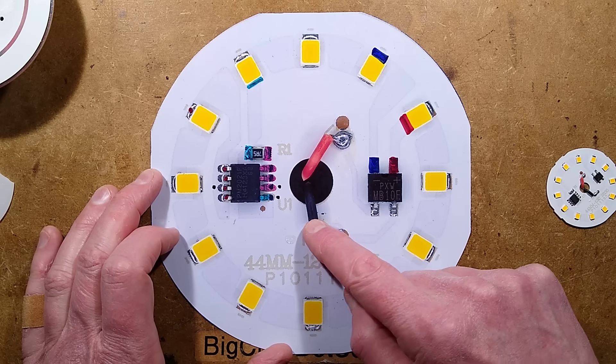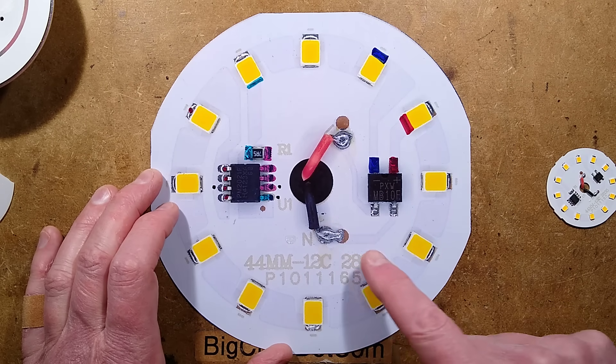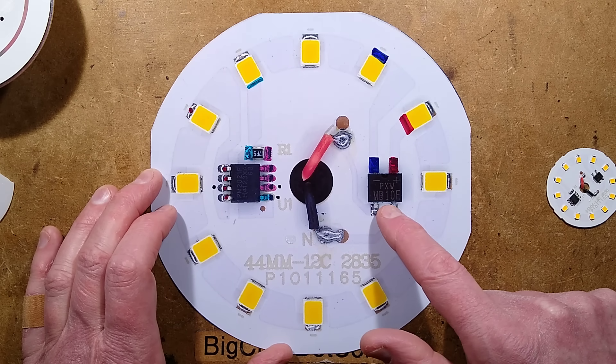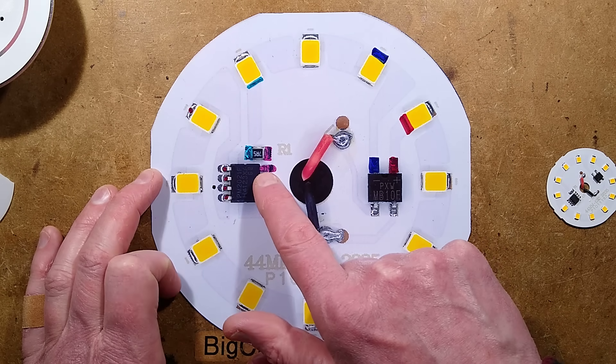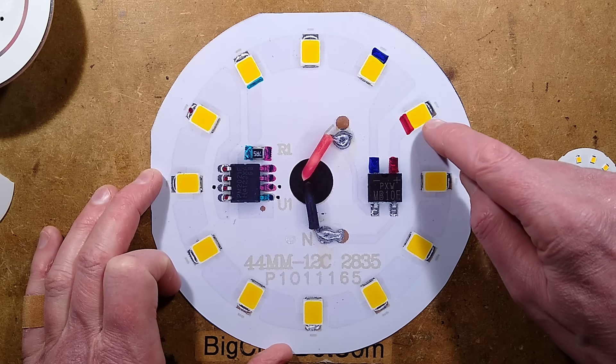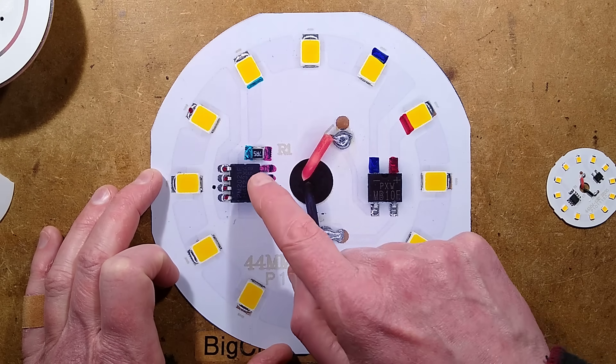So the incoming AC supply on this red and black wire, which is quite odd, goes straight to the bridge rectifier. And then normally the negative would go straight to the regulator chip, and the positive would go through the LEDs and then to that chip.